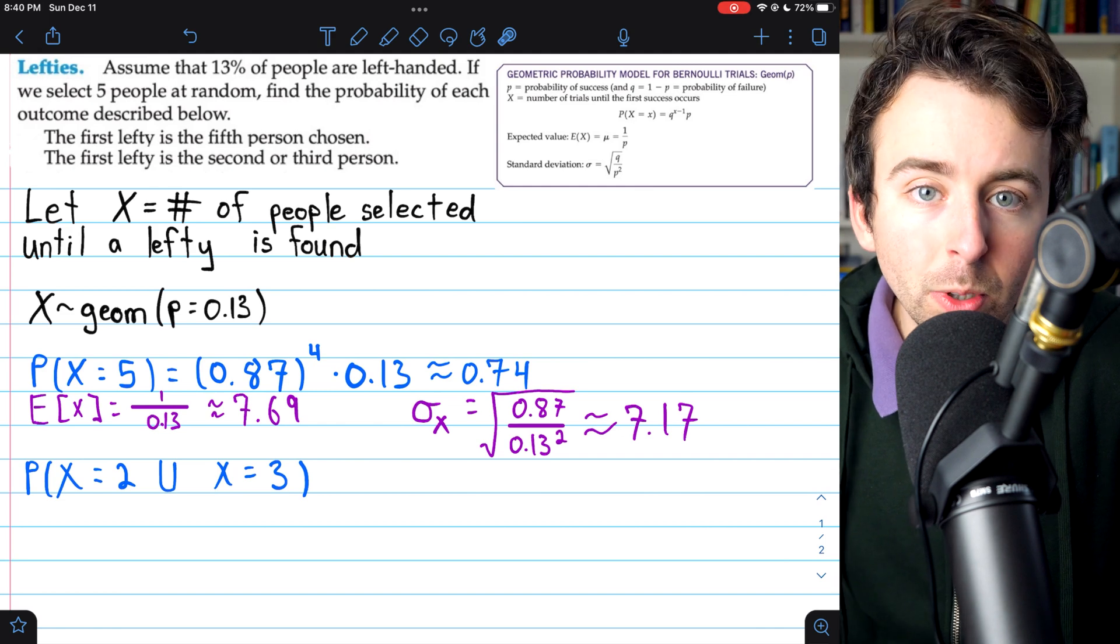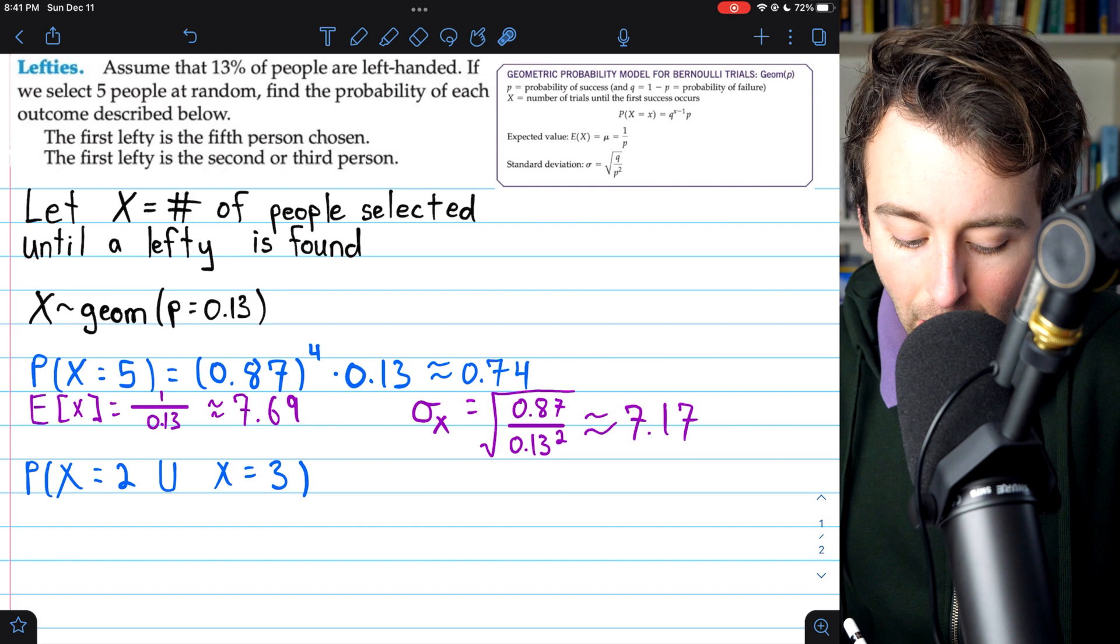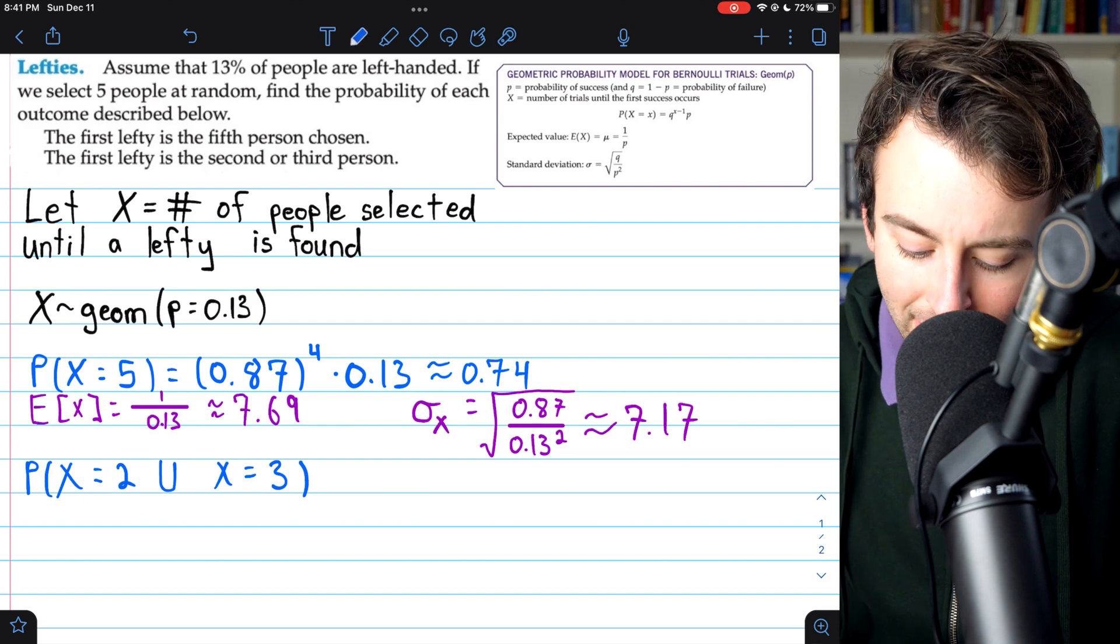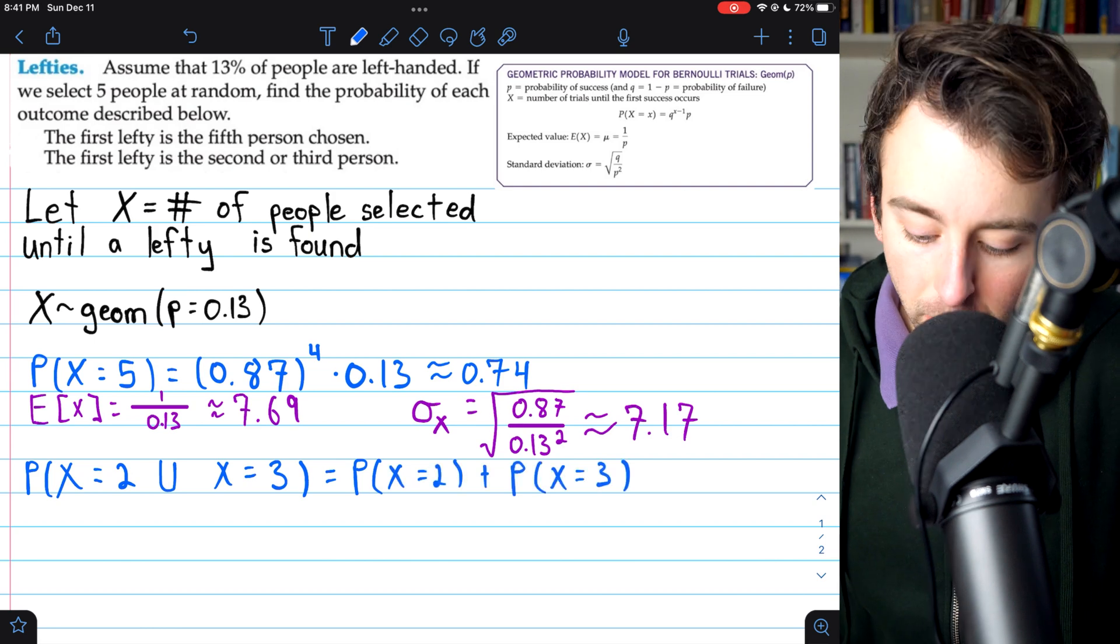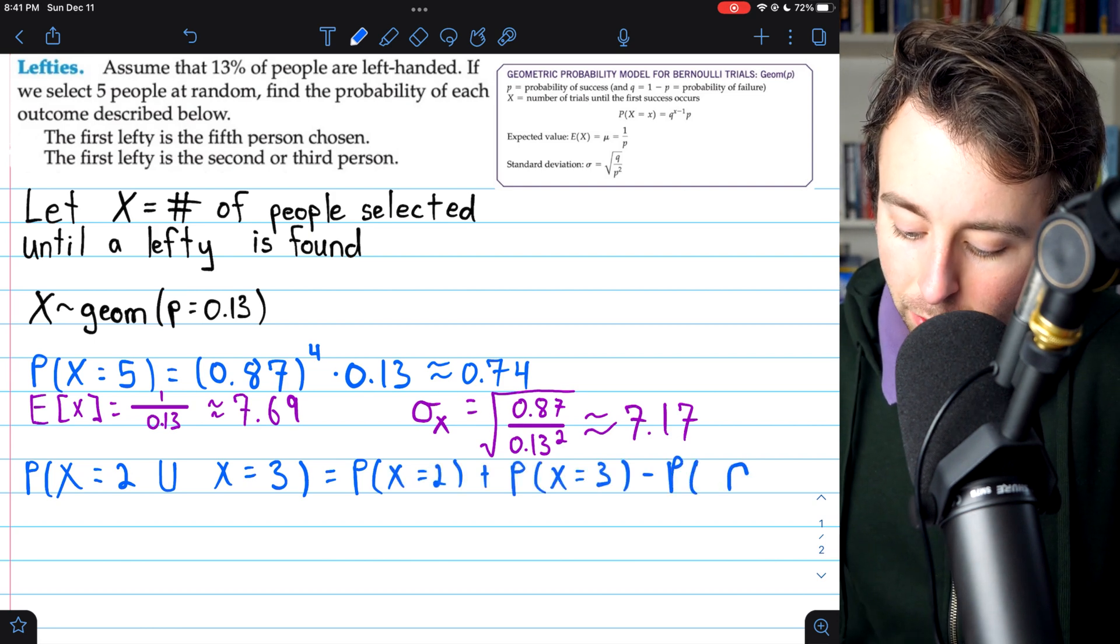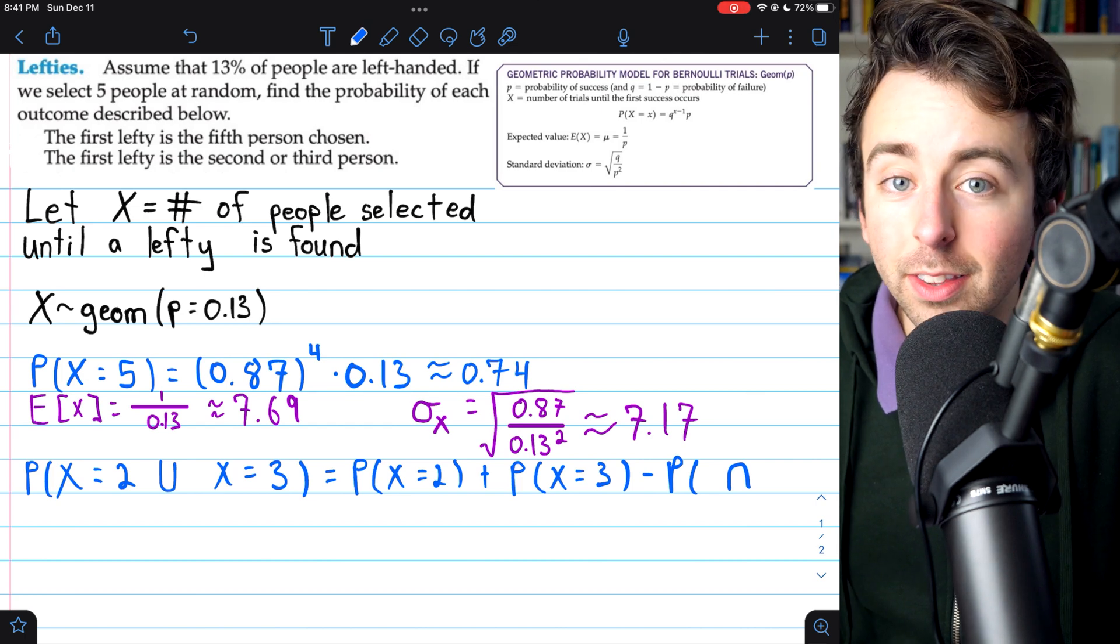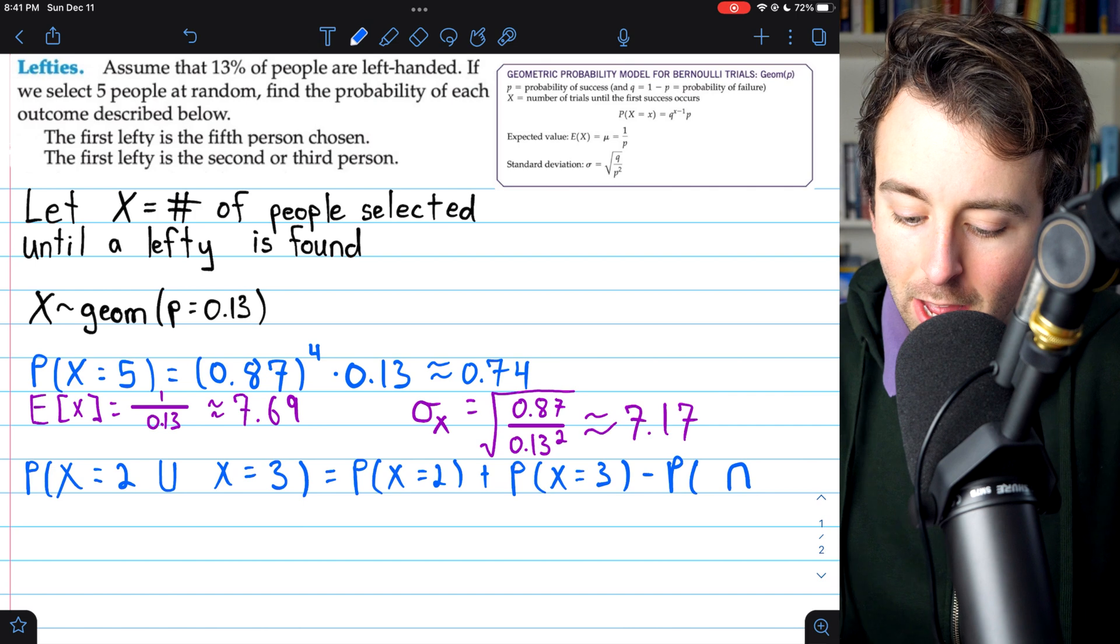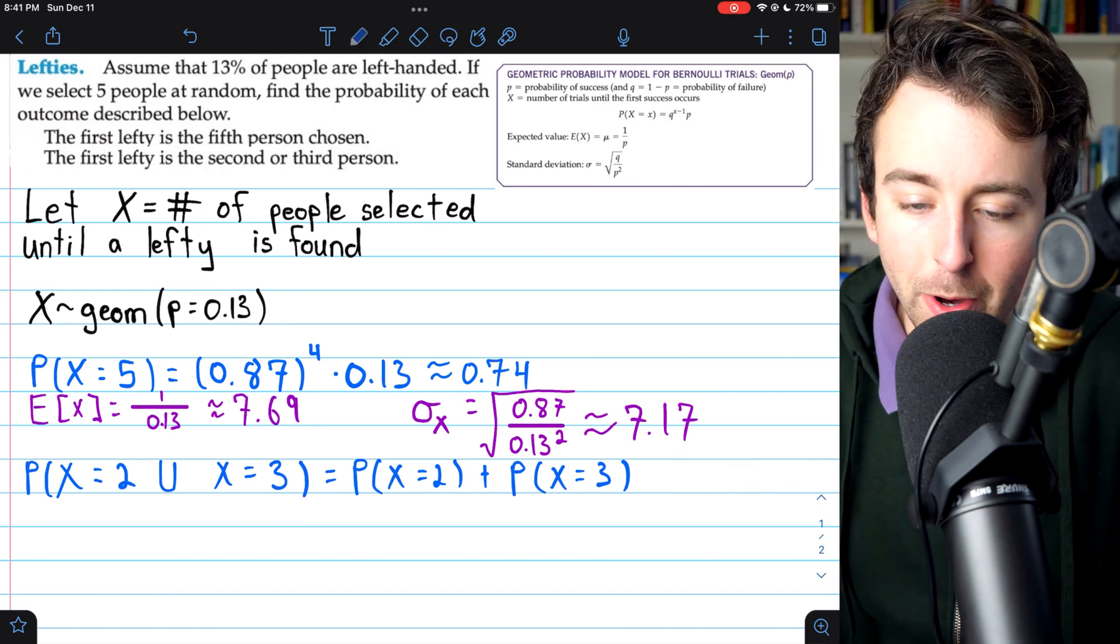So these events are mutually exclusive, which is good because that means all we need to do to calculate the probability of their union is add their individual probabilities. In general, we would also have to subtract the probability of the intersection of these events to avoid double counting the times where they both happen. But since there is no intersection of these events, we don't have to worry about that.